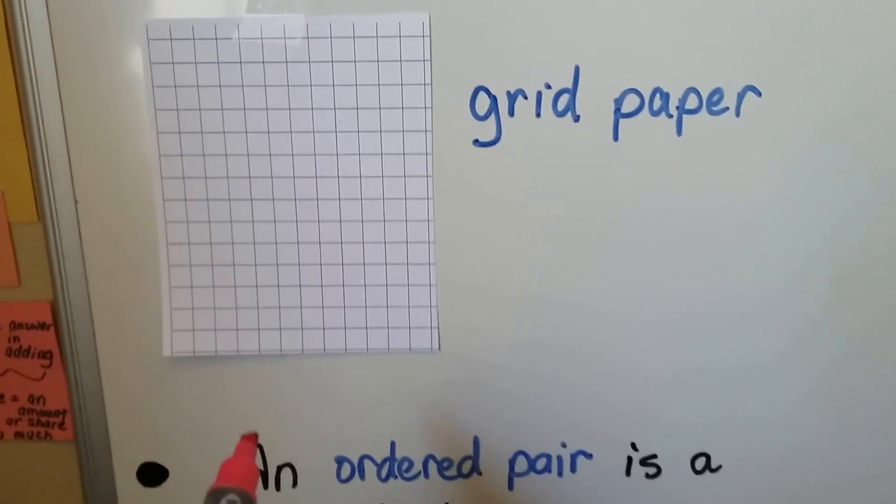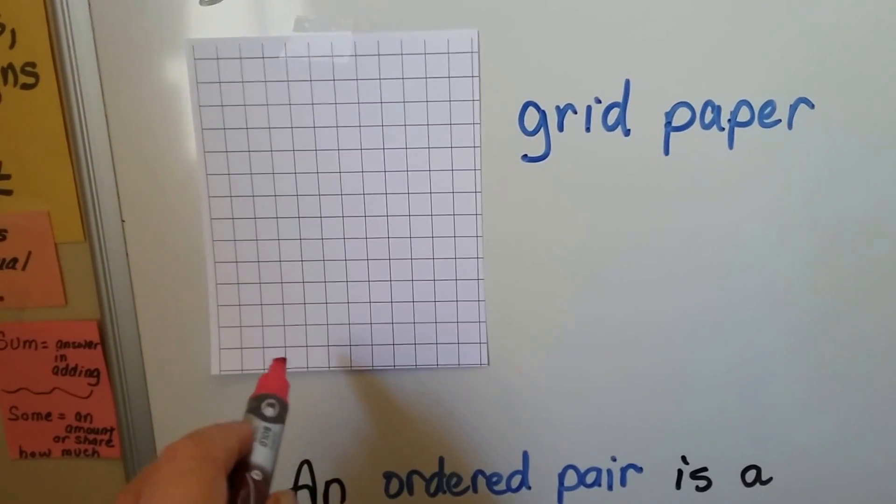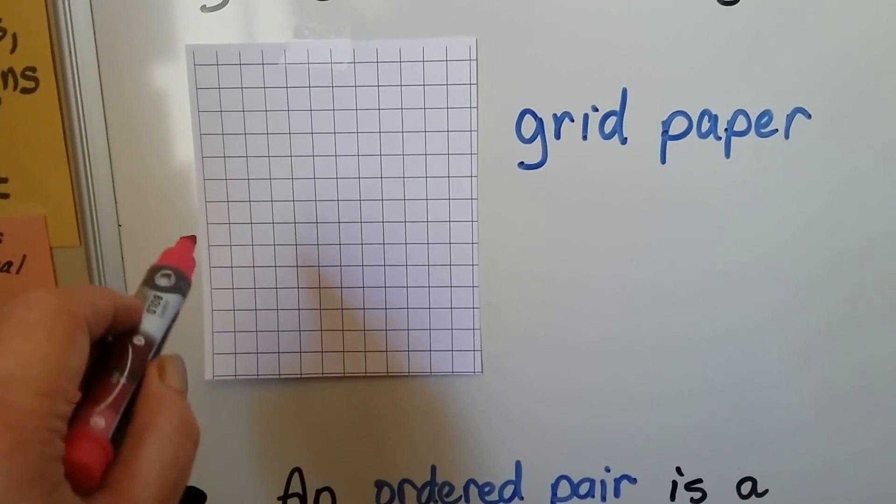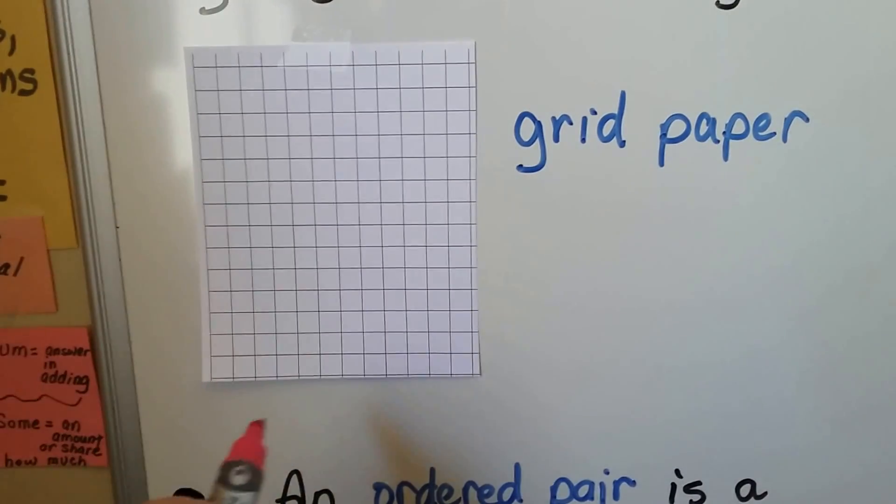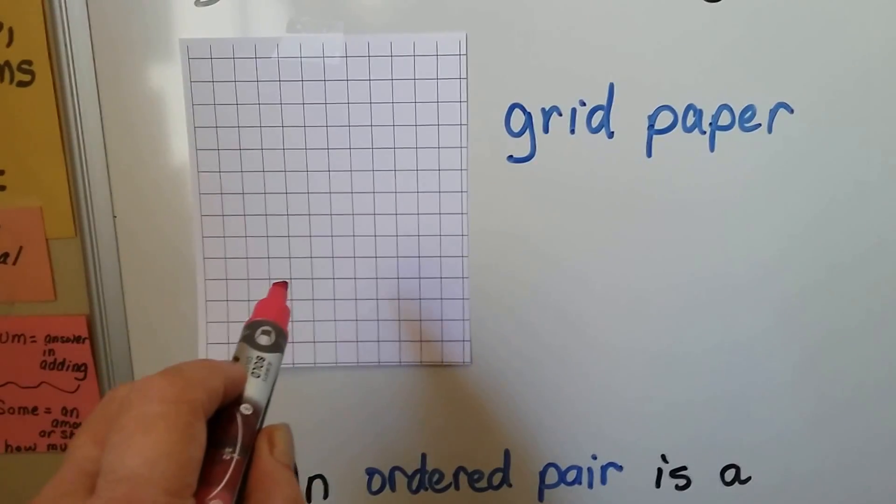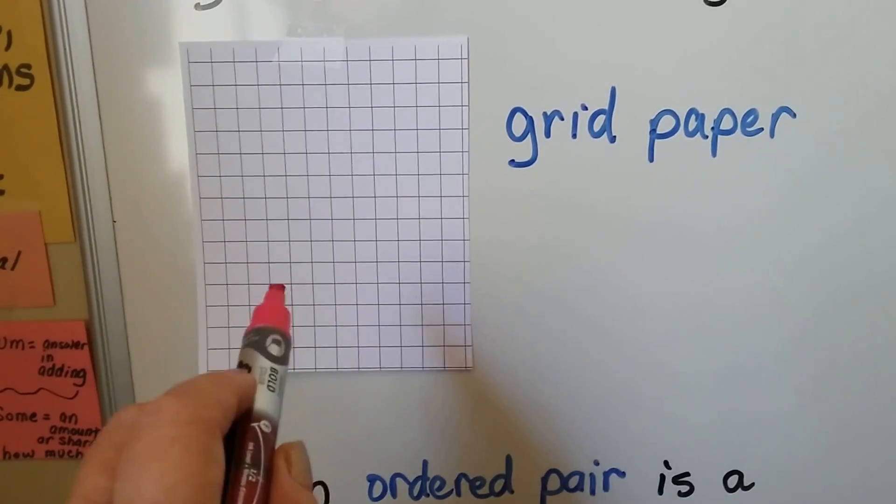So if this was numbered and we had 1, 2, 3, 4, 5 going across this way and numbers going up 1, 2, 3, 4, 5, 6, we would be able to see where this number meets a number on this side and find the exact point where they meet, where they crisscross.